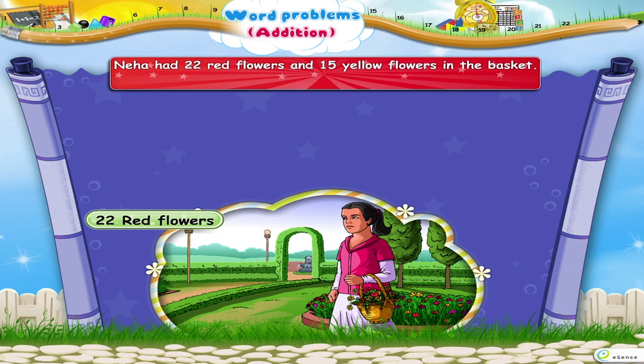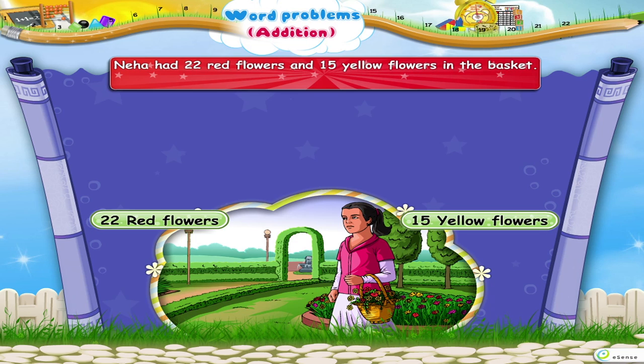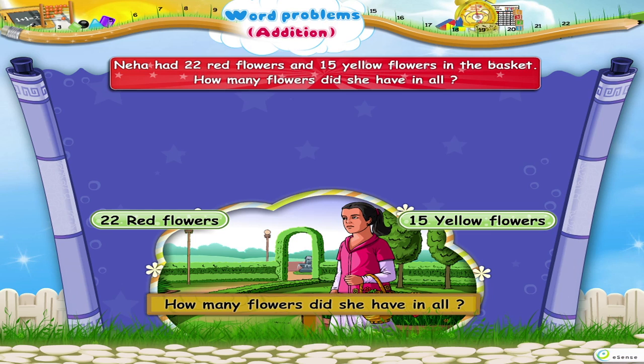Neha had 22 red flowers and 15 yellow flowers in the basket. How many flowers did she have in all?